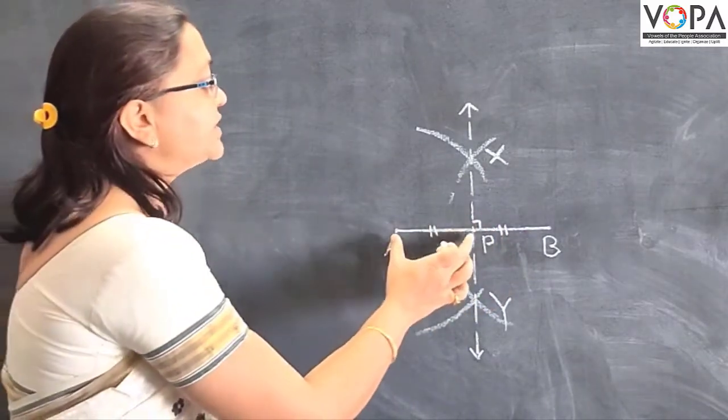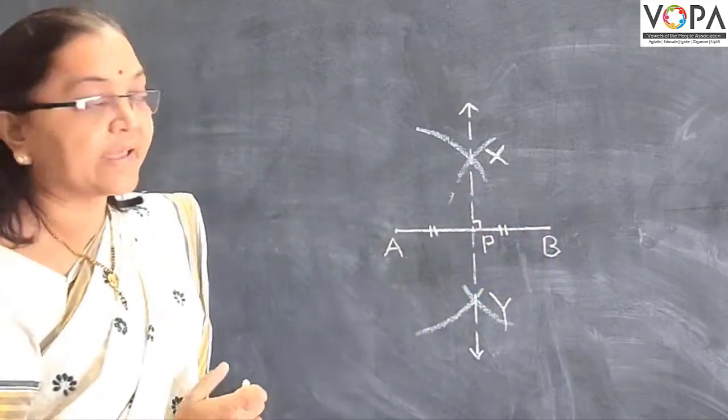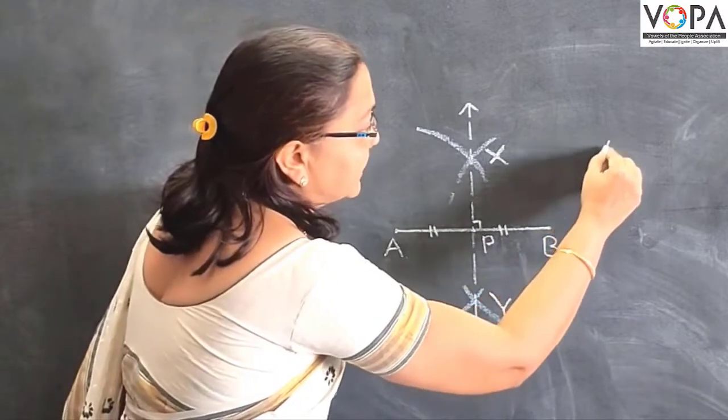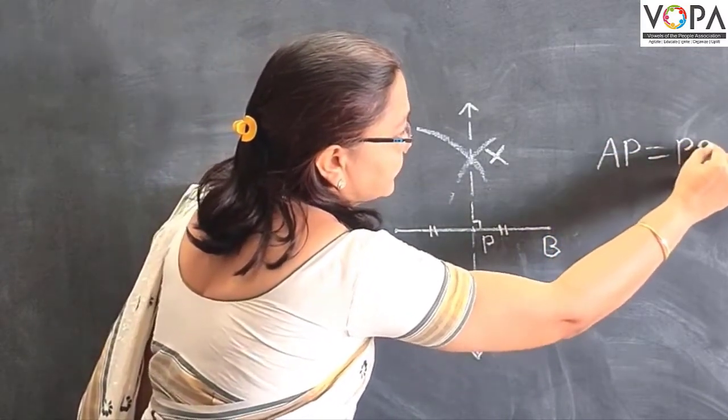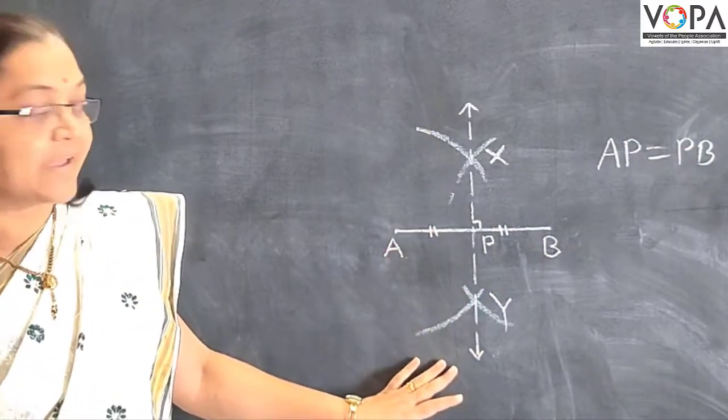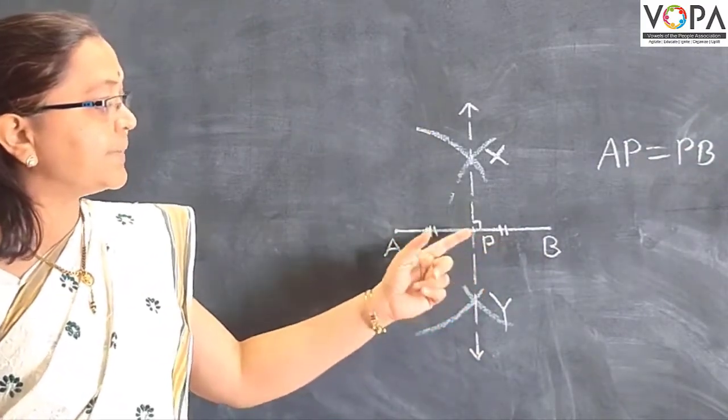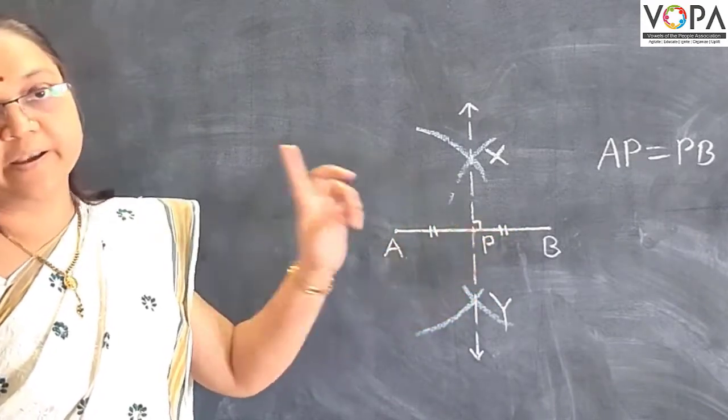If you measure distance AP and distance PB, that distance will be equal. That is here AP is equal to PB. This line XY divides segment AB in two equal parts and also it is perpendicular. That's why it is called as perpendicular bisector.